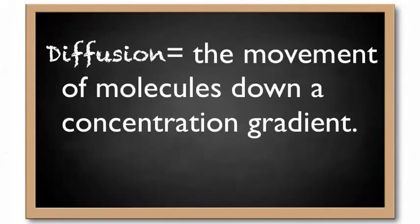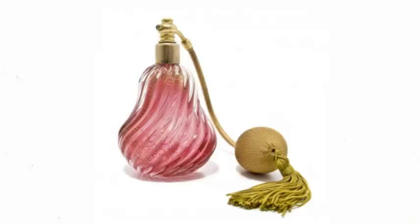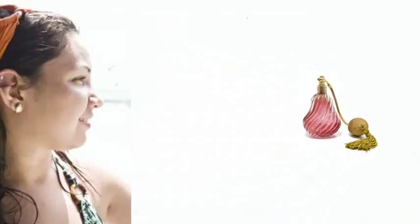The first term I want to introduce is diffusion. Diffusion is the movement of molecules down a concentration gradient. Think about when someone sprays perfume across the room from you. At first you can't smell a thing but slowly you begin to get a whiff of it. That's because the molecules started out concentrated in that one area, then began to mix and bounce off the air molecules and eventually spread themselves throughout, balancing the concentration.